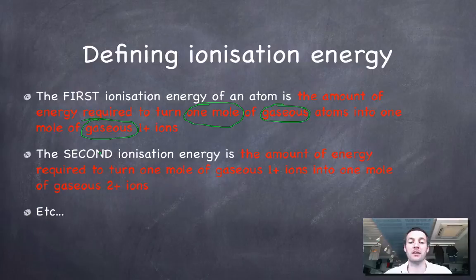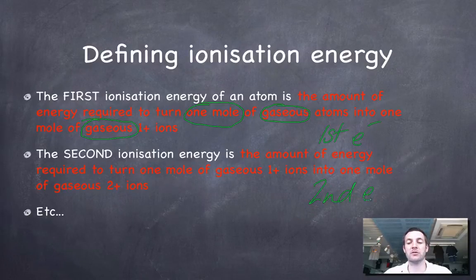Similarly, the second ionization energy is the amount of energy required to turn one mole of gaseous one-plus ions into one mole of gaseous two-plus ions. So in other words, this is removing the first electron and this is talking about removing the second electron from atoms. Not just from one atom, but from one mole.